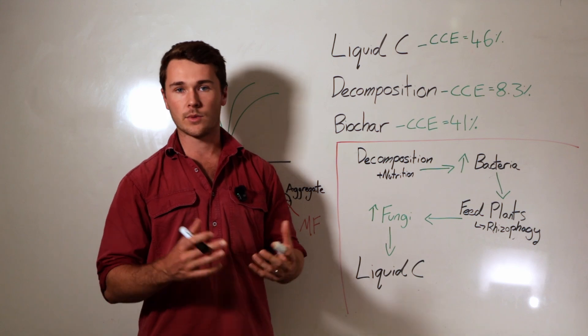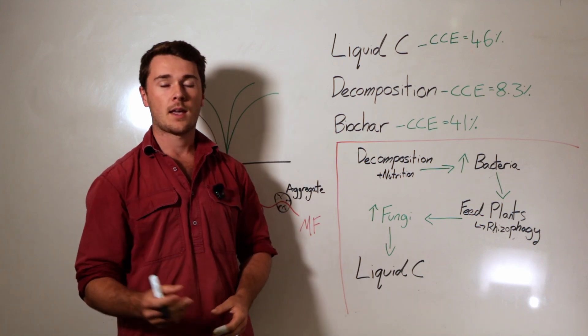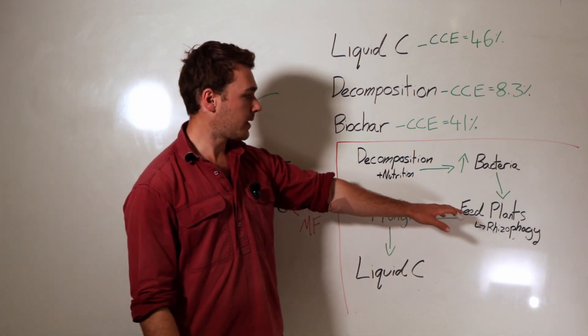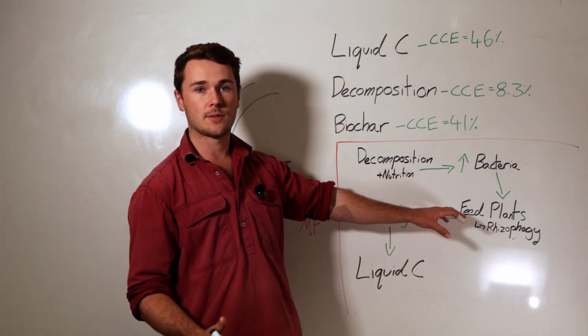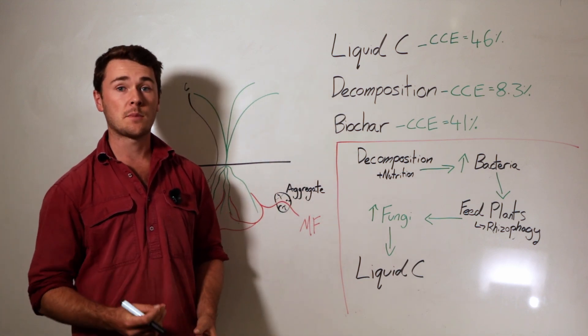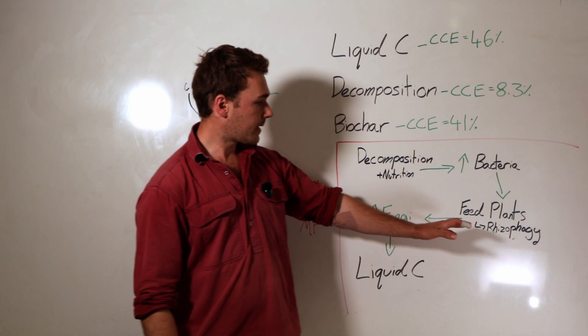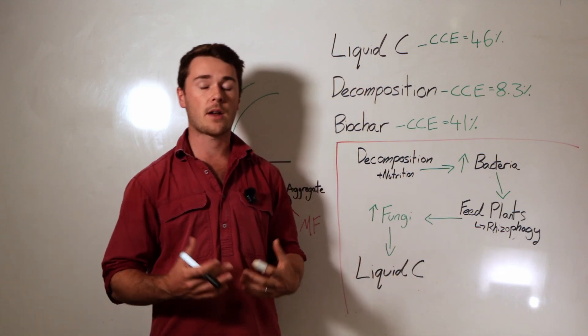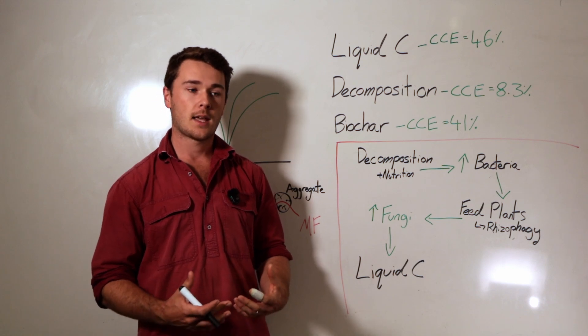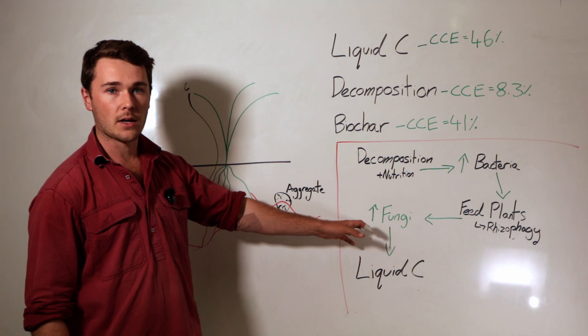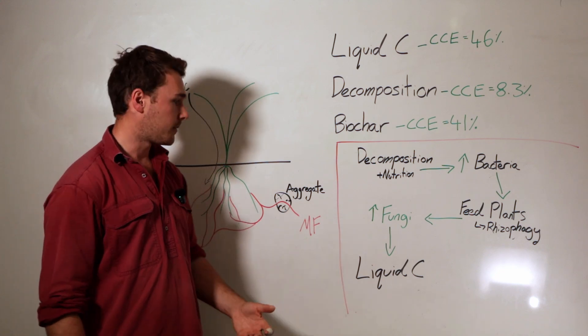Basically the plant eats the microbes for its food. What happens is the plant takes up bacteria or different microbes, rips off the cell wall, and consumes the proteins and all the minerals in that. This pathway of plants getting nitrogen as well as other mineral nutrition is a highly efficient pathway which allows the plant to then increase its lipid production.